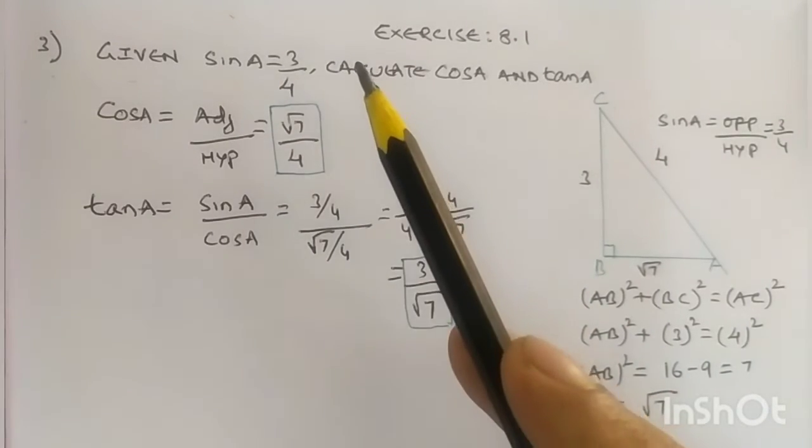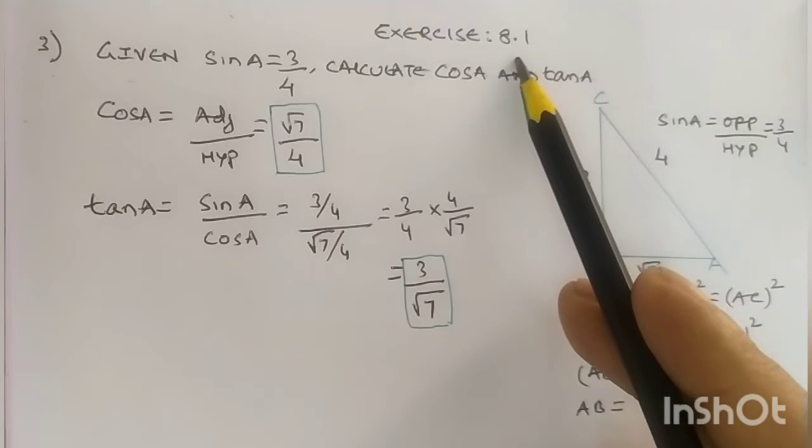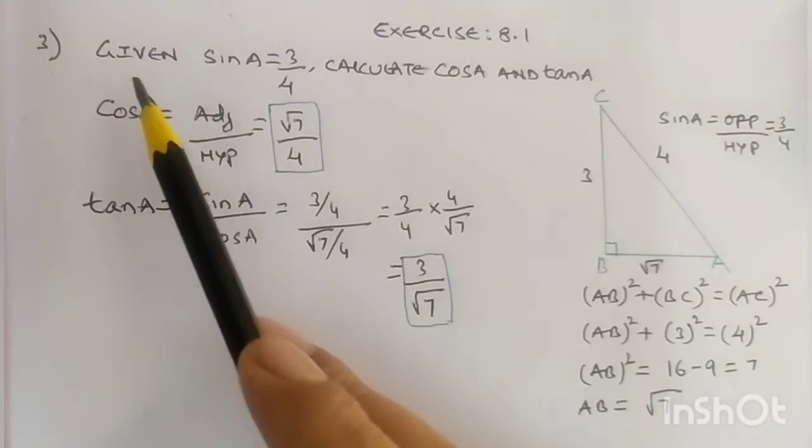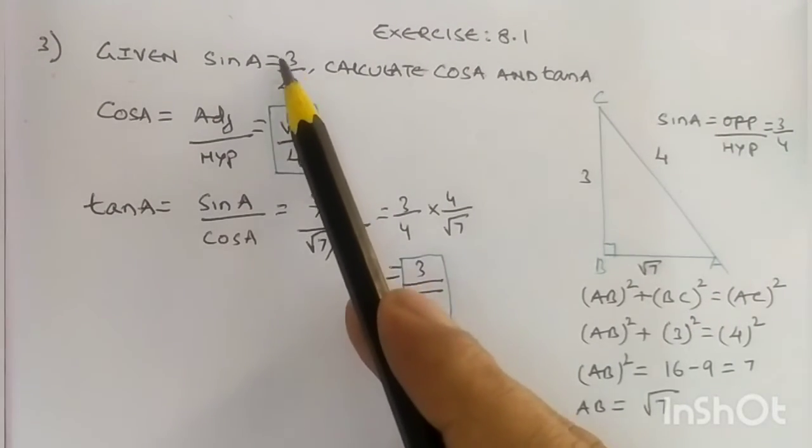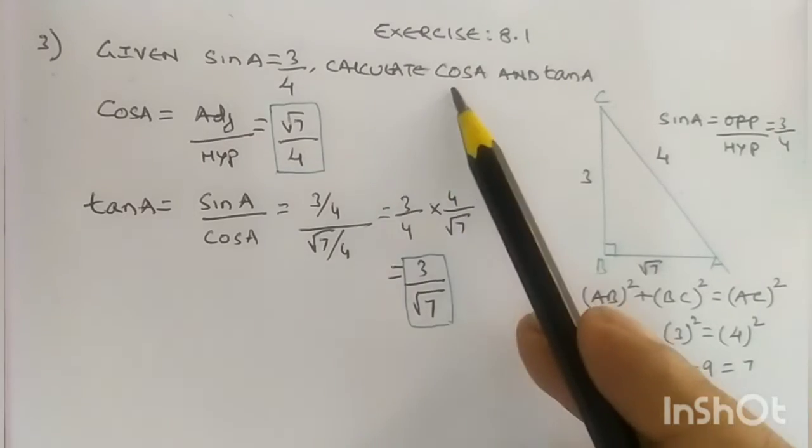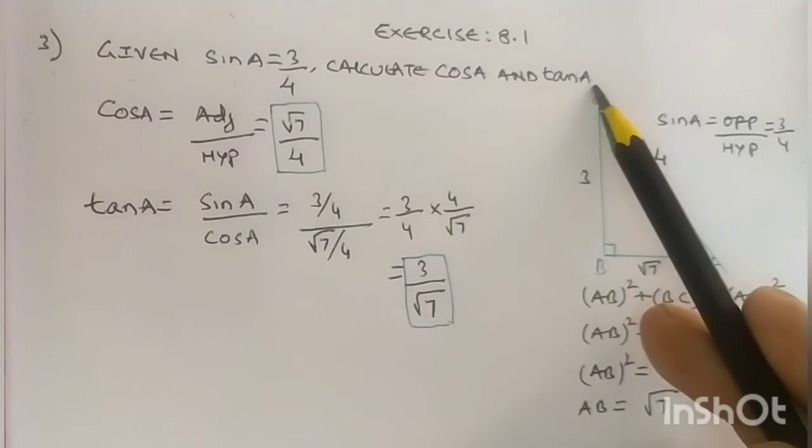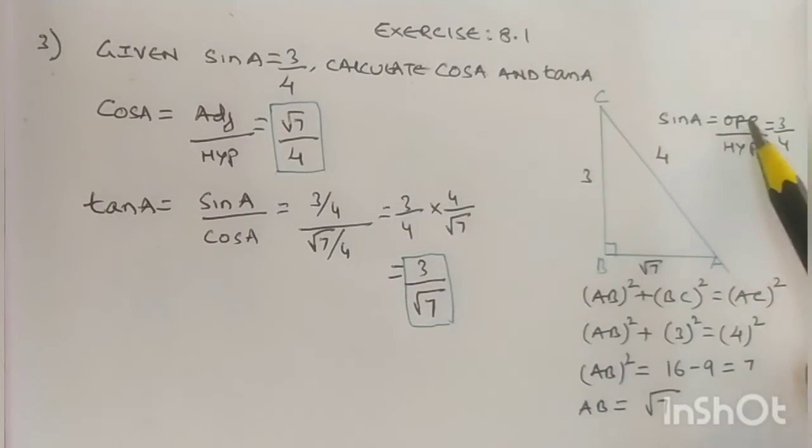Chapter 8: Introduction to Trigonometry, Exercise 8.1, Question Number 3. We are given sin A equals 3 upon 4. We have to calculate cos A and tan A. We know that sine A equals opposite upon hypotenuse, that is 3 upon 4.